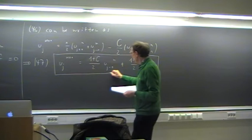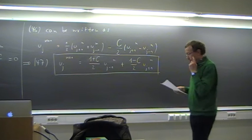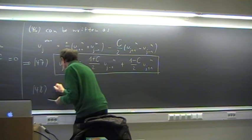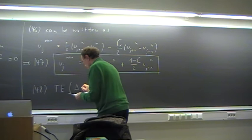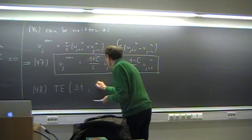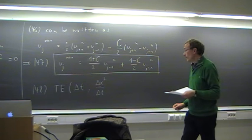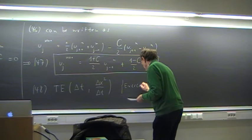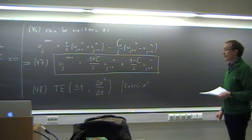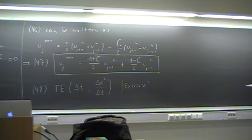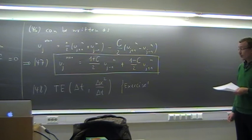The solution at the new time level is computed as one half times (1 plus Courant number) times u_{j-1}^n plus one half times (1 minus Courant number) times u_{j+1}^n. It is a weighted average of the values at u_{j±1}. Interestingly, the value u_j^n is not involved at all. As an exercise, one can show the truncation error is of order Δt and Δx²/Δt.